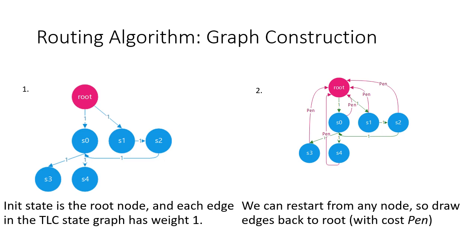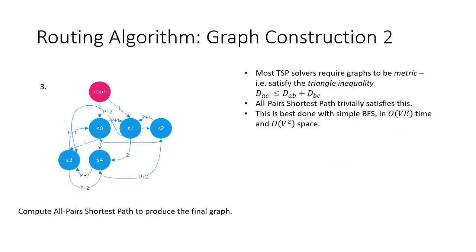For graph construction, the first figure is the TLC state graph with cost-1 links to every state. We then draw edges back to the root with the penalty cost to allow restarts from any node. Most traveling salesman solvers require metric graphs - satisfying the triangle inequality, where the cost of a path from A to C is less than or equal to the cost of A-to-B plus B-to-C. Running all-pairs shortest paths on the graph trivially satisfies this, best done with BFS in O(V × E) time and O(V²) space. By converting our graph to this metric form, we can then use an off-the-shelf traveling salesman solver.